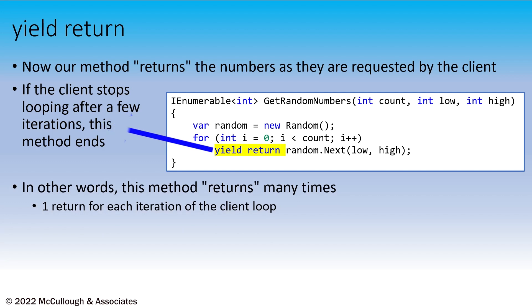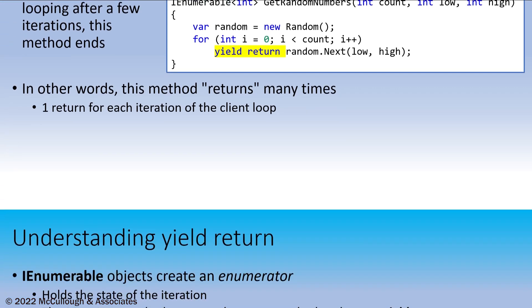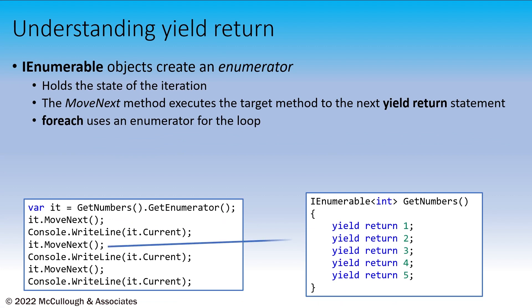If the client ends their loop early, the method is no longer executed. Unlike the array version, we're not allocating an array of 5,000 elements and populating it, even though the client only looks at a few elements. How does this work? Well, let's just create a very simple method that doesn't have a loop, just a bunch of yield return statements.